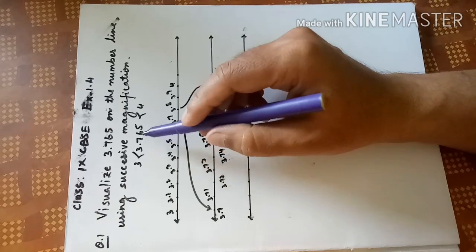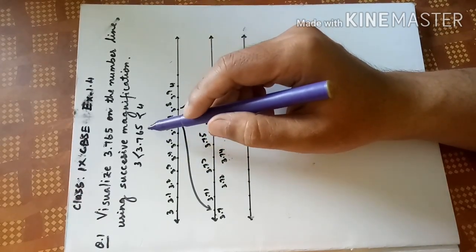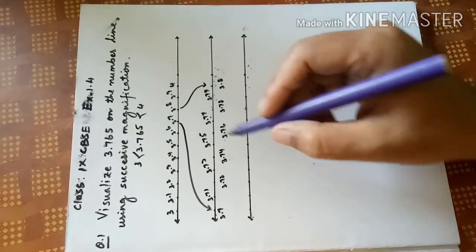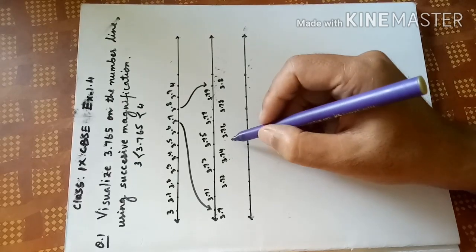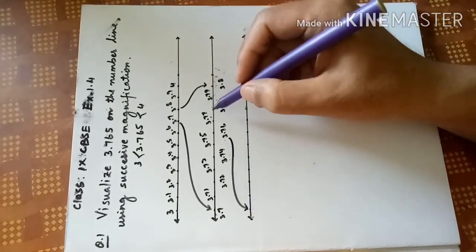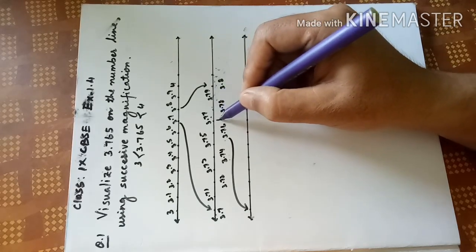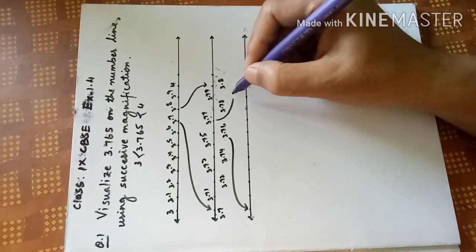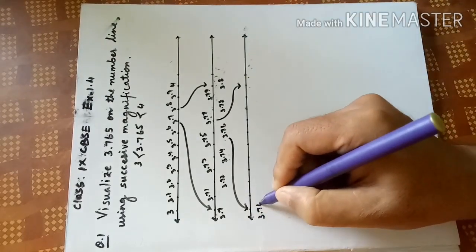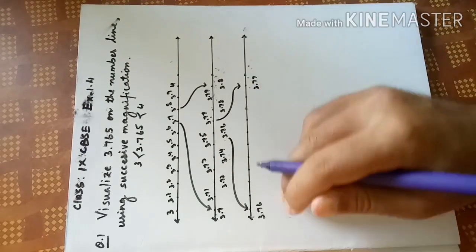3.765 is between 3.76 and 3.77, so we start from 3.76. Another one is 3.77. Between these two numbers we have to find 3.765.